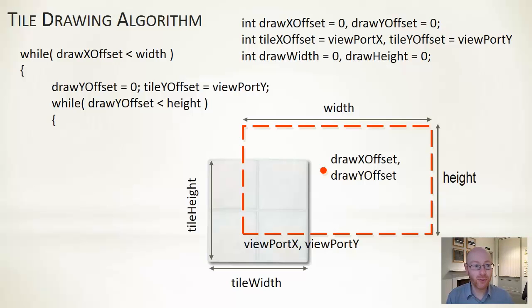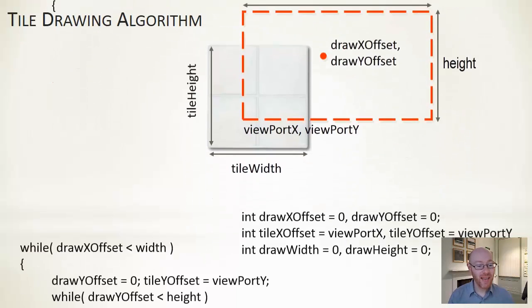At the start of each of the vertical strips, we'll reset our y offsets back to the beginning. We're going to fill in all of the y components and reset our tileYOffset back to wherever the bottom of the viewport is.